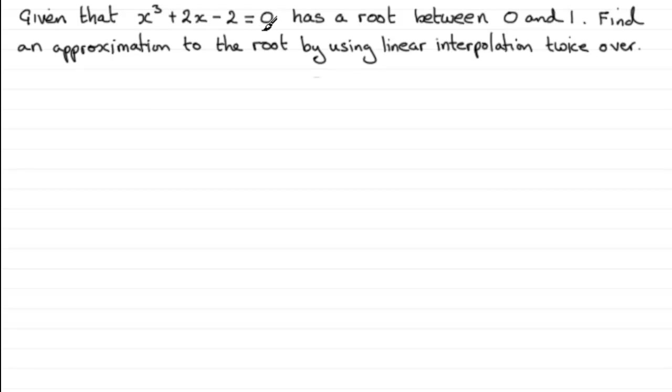And there are several methods out there. Last time we discussed the solution of this equation by using the bisection method. Now I'm going to show you how we can use another method called linear interpolation. So we're given this equation, x³ + 2x - 2 = 0, told that it has a root, a solution in other words, between 0 and 1. And we've got to find an approximation to this root by using linear interpolation twice over.